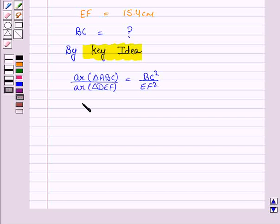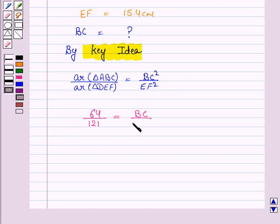Now, let us substitute the values given to us. Area of triangle ABC is 64 cm². Area of triangle DEF is 121 cm². We have to find BC and EF has length 15.4 and we have to take the square of this.